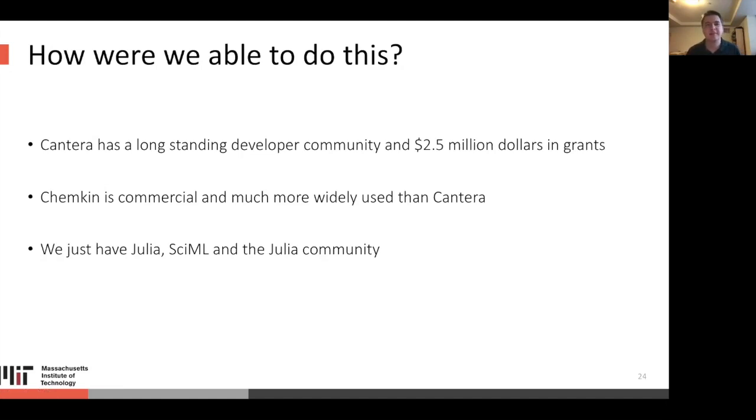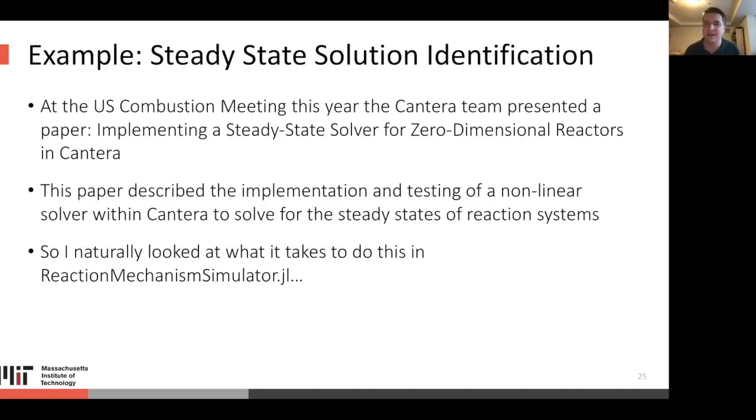Now it's worth talking about how we were able to do this and how we were able to build a software that's competitive with these very long-standing and well-funded codes. Cantera has a very long-standing developer community, has millions of dollars in grants, Chemkin's commercial, it's very widely used, well-funded, and we really just have Julia, SciML, and the Julia community. I think it's best to illustrate this with an example. Steady-state solution identification. At the U.S. Combustion meeting this year, the Cantera team presented a paper implementing a steady-state solver for zero-dimensional reactors in Cantera. This paper described the implementation and testing of a nonlinear solver within Cantera to solve for the steady-state solution to reaction systems. Naturally, I looked at what it would take to do this inside RMS.